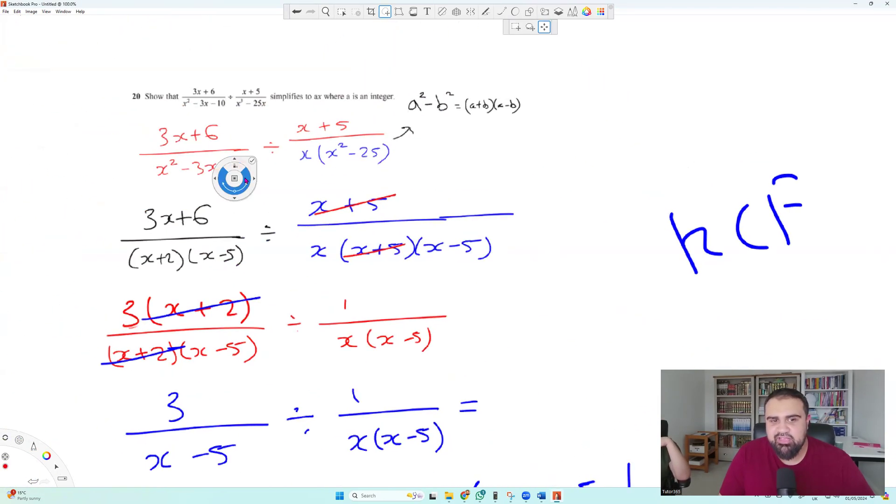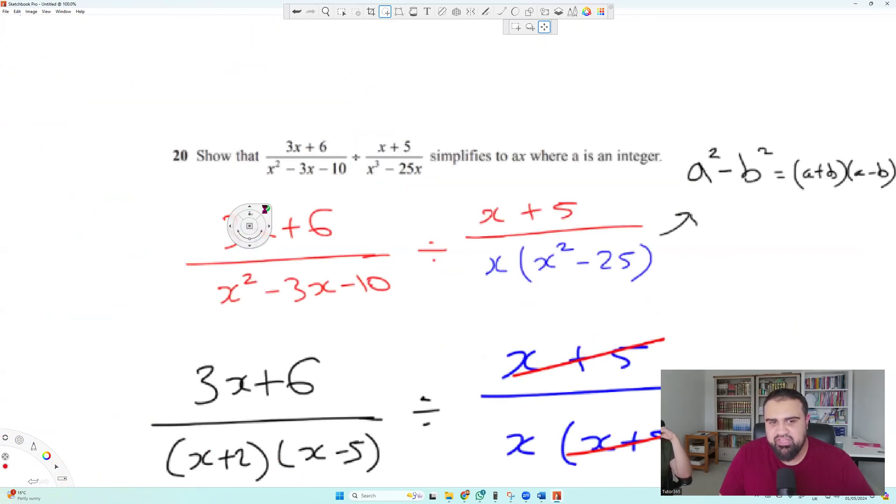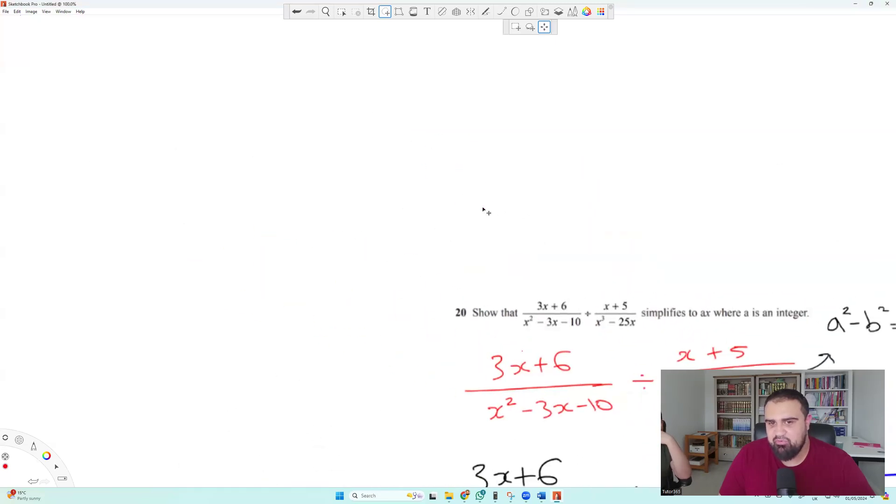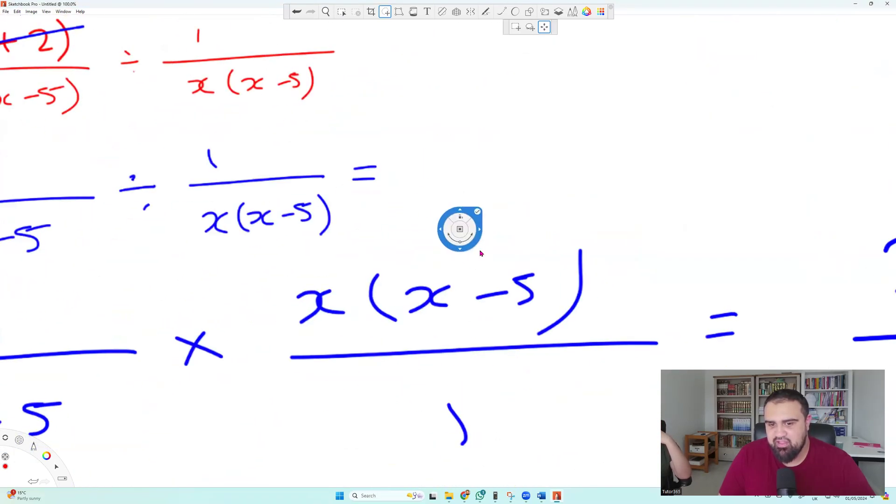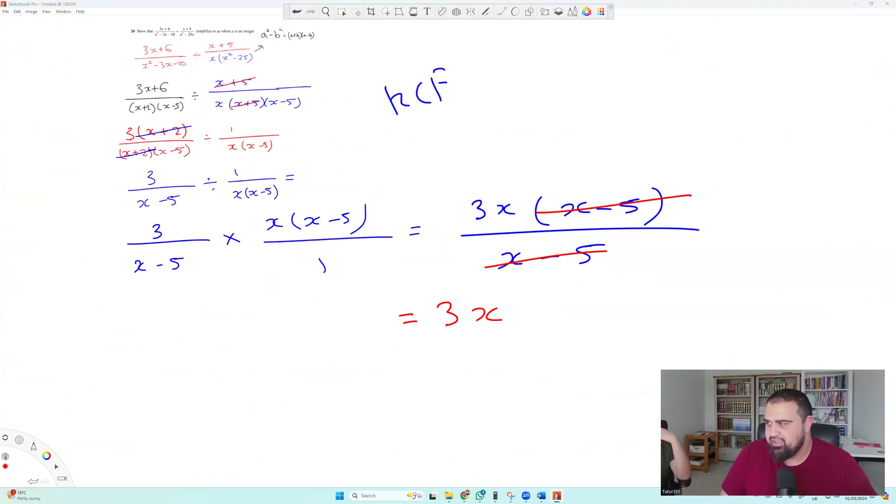So look, the examiner has literally, we've unraveled this big thing here into just 3x. It's worth 4 marks. Well, there we go. The examiner wanted some, but we've wrecked him. The answer is just 3x in the end. Sorry if it got a bit messy. I'm just going to end the lesson here.